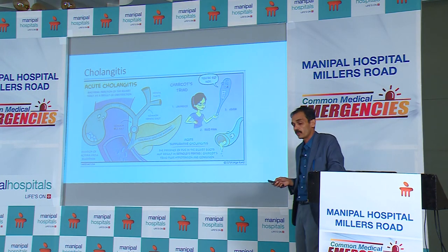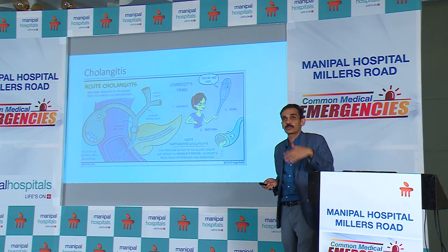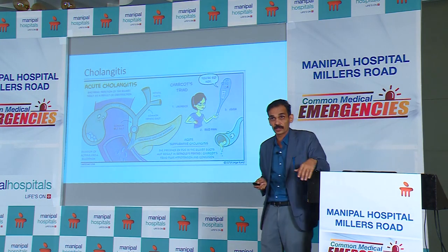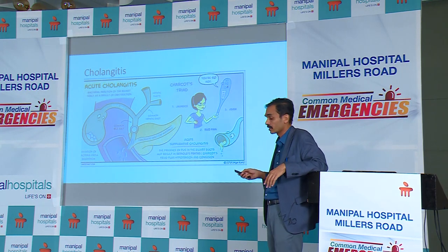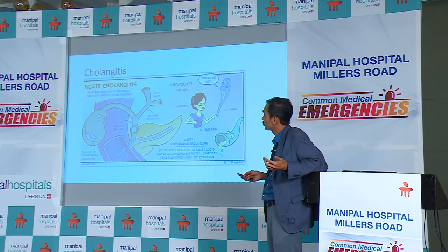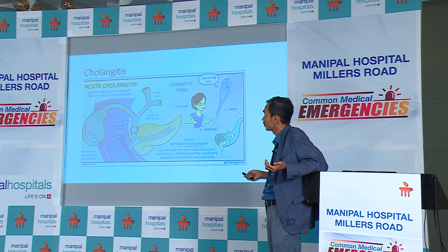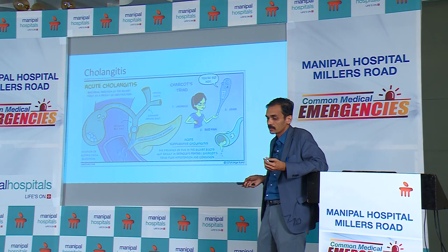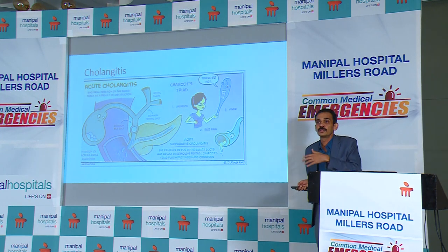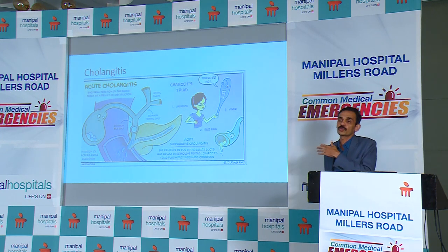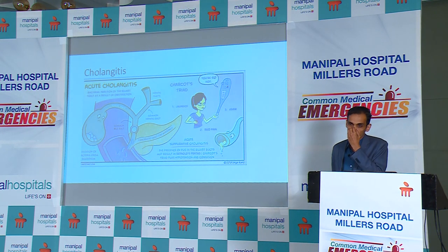This is something very important. We have read about Charcot's triad and Reynolds' pentad in our textbooks. What happens is either there is a biliary obstruction causing sepsis - even a small stone can cause biliary sepsis. Believe me, this is one of the most gratifying procedures to do an endoscopy for.